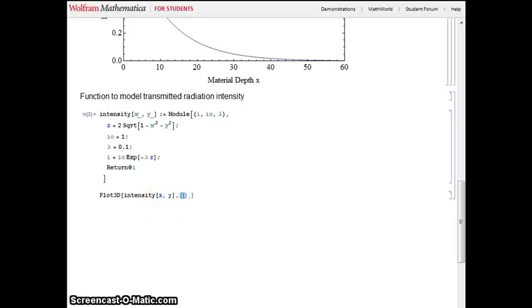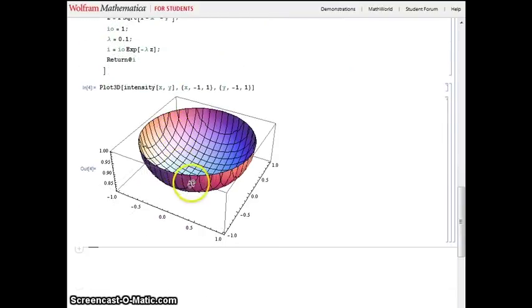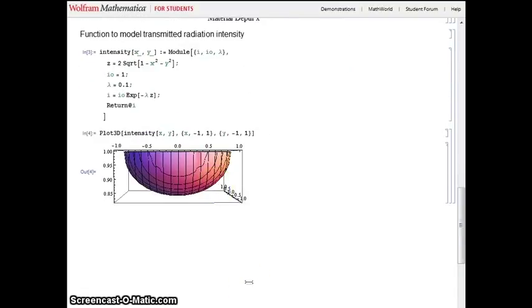Let's have a look at the intensity distribution in 3D. This plot shows us that the intensity at the edges of the projection is greater than the intensity in the middle of the projection.